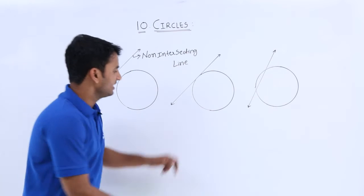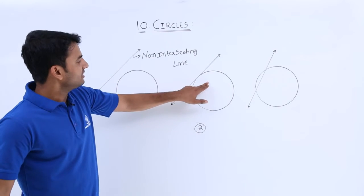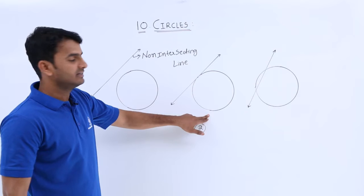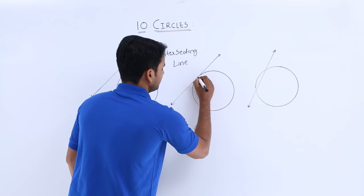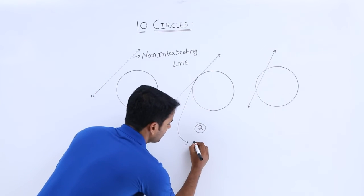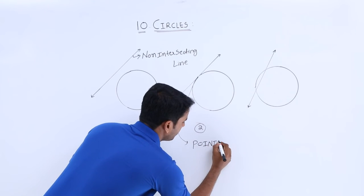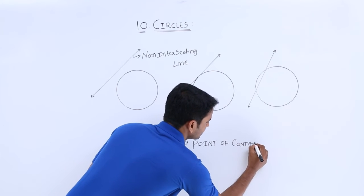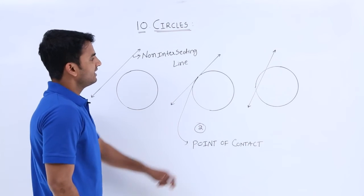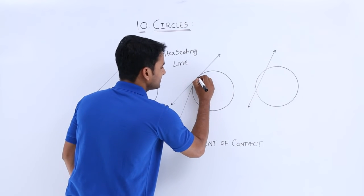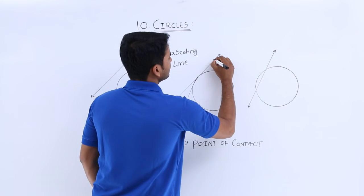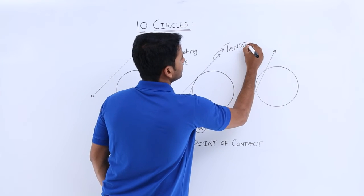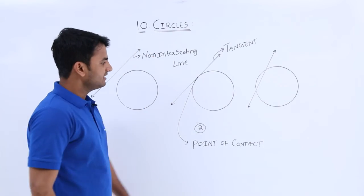And here, in case 2, we have one common point between this line and this circle. Here, this common point is considered as a point of contact. And here, this line has only one common point with the circle. That's why this line is considered as a tangent.